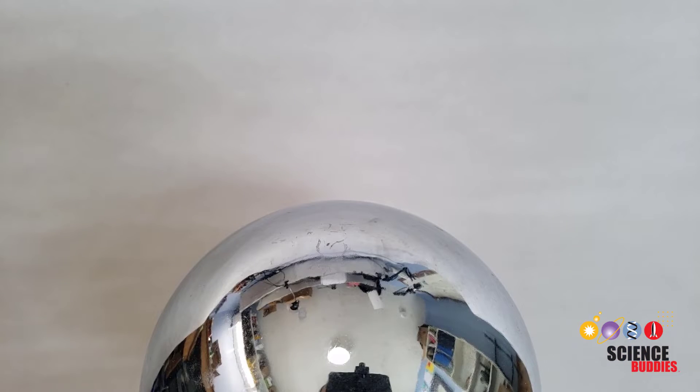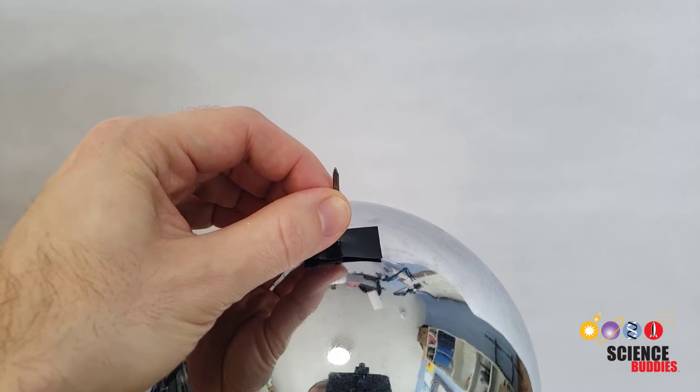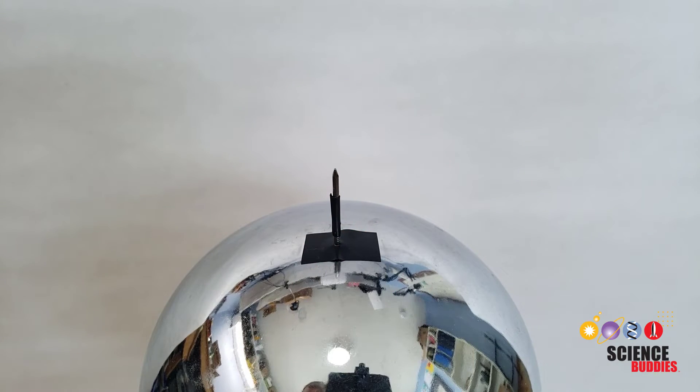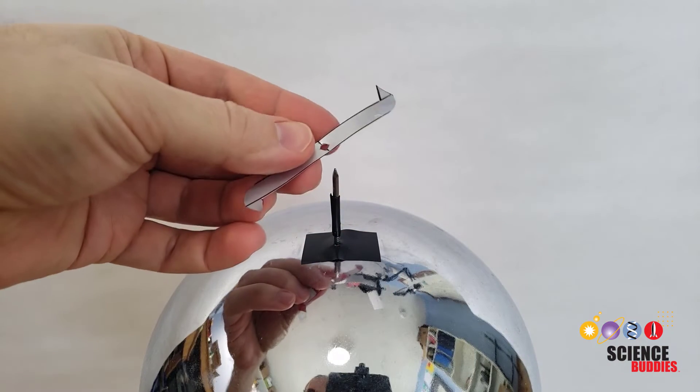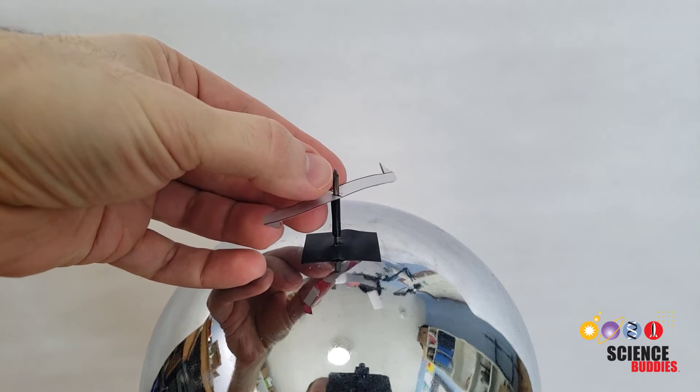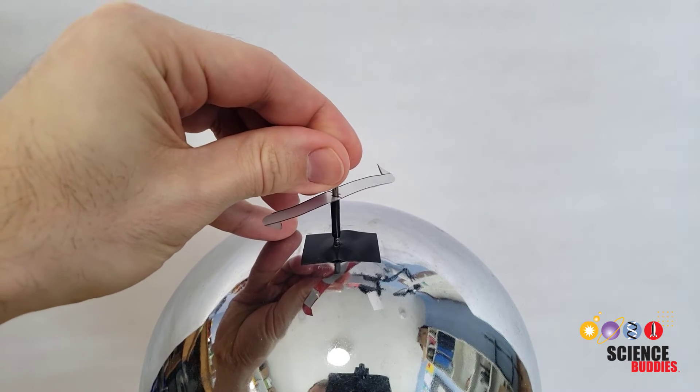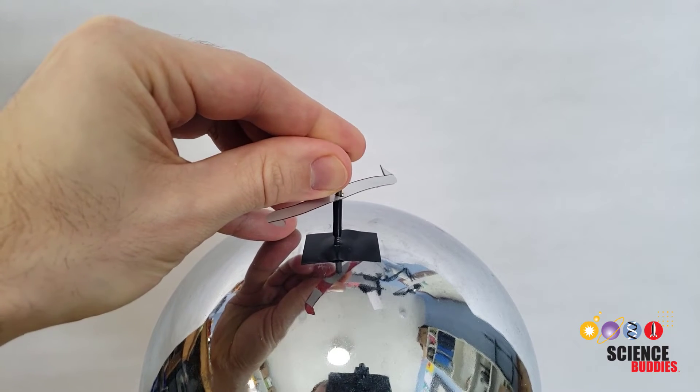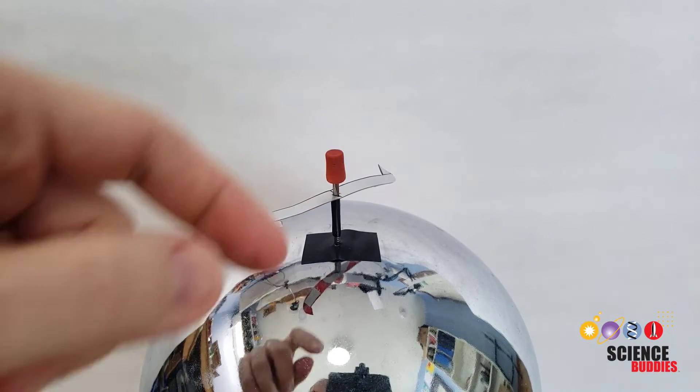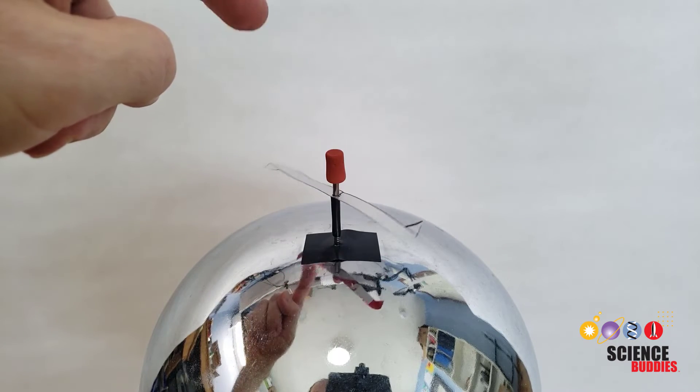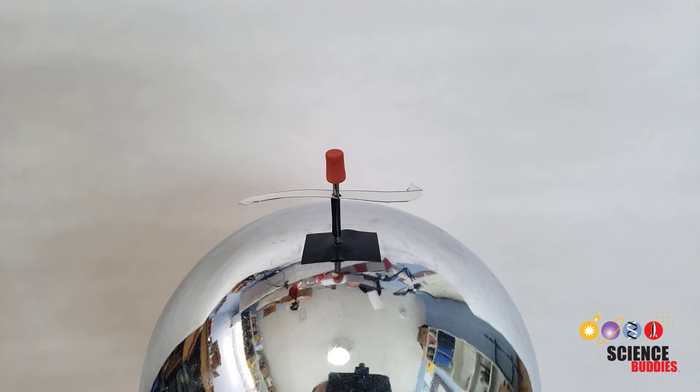To attach the rotor, tape the nail directly to the top of the Van de Graaff generator. Press down firmly to make sure the nail is in electrical contact with the dome. Slide the rotor onto the nail, then press the pencil eraser onto the top of the nail. This will prevent the rotor from flying off and is easily removable if you want to swap in a different rotor later. Double check that the rotor can spin freely without getting stuck. If it doesn't, you may need to widen the hole or flatten any sharp edges.